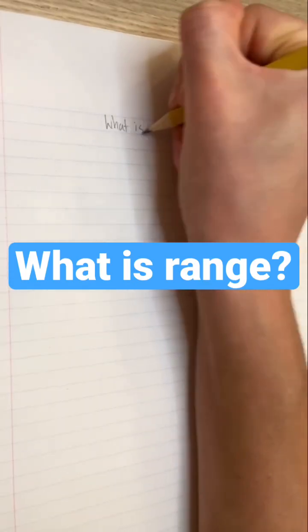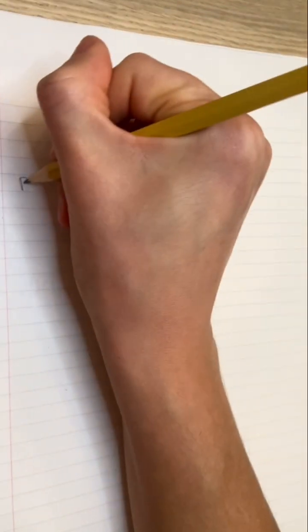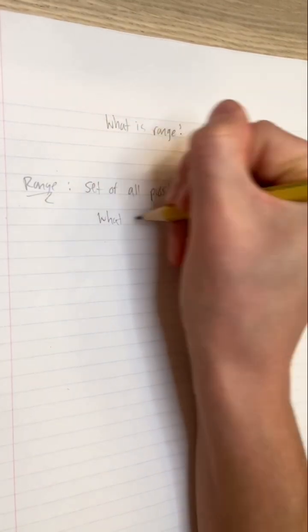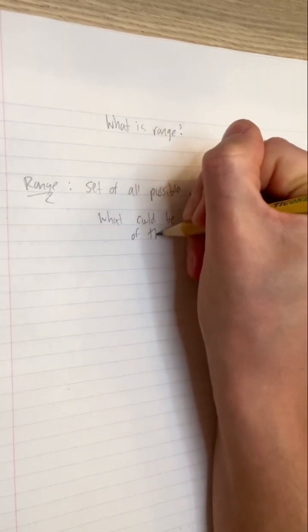In everyday life, the word range means the area or extent of something. When it comes to math, a function's range is the set of all possible outputs, which we usually use f or y to represent. In other words, which numbers could be the output or result of this function?